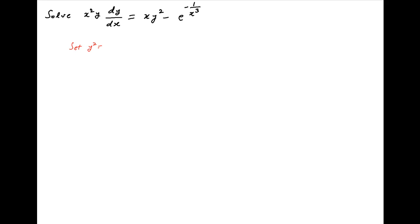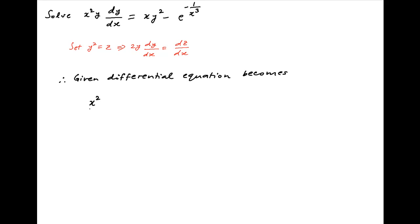We start by putting y square equal to z. Taking the derivative of both sides with respect to x, we get 2y dy upon dx is equal to dz upon dx. Using this result, the given differential equation can be written as x square upon 2 times dz upon dx is equal to x times z minus e raised to the power minus 1 upon x cube.